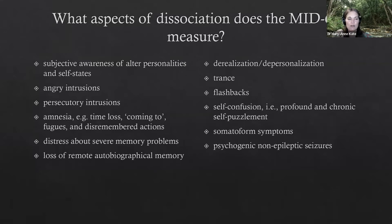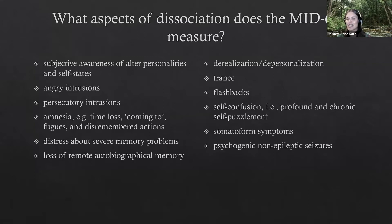The subscales include awareness of alter personalities, angry intrusions, persecutory voices — which could be an inner critic at low levels, or more than that at higher levels. Amnesia in this context means time loss when a person is in a different personality state — a lack of awareness in DID situations. There are also questions about distress over severe memory problems, depersonalization, derealization, trance, flashbacks, and a profound chronic sense of self-confusion. Somatic symptoms are also measured — like conversion disorder symptoms such as suddenly not being able to see, hear, or walk, and seizures.